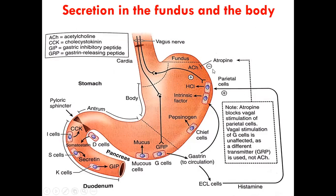Acetylcholine will be inhibited by atropine, because atropine is an anticholinergic drug that inhibits the interaction between acetylcholine and muscarinic receptors, reducing the production of these secretions. In the antrum, there are more G cells and mucus cells — mucus cells producing mucus and G cells producing gastrin.